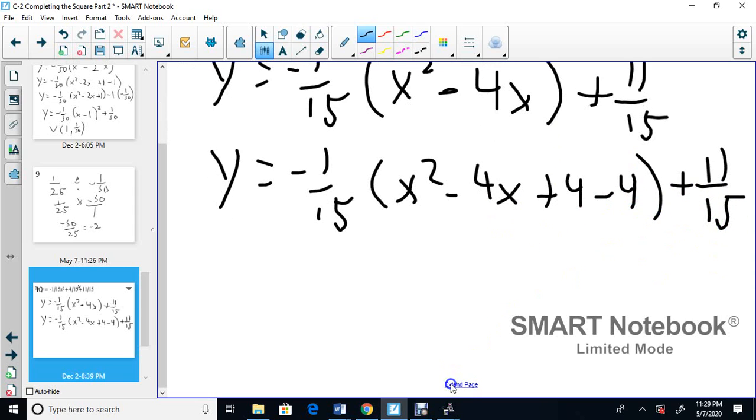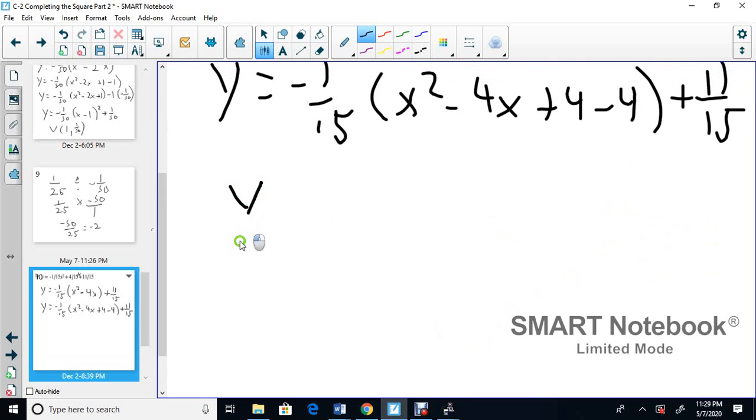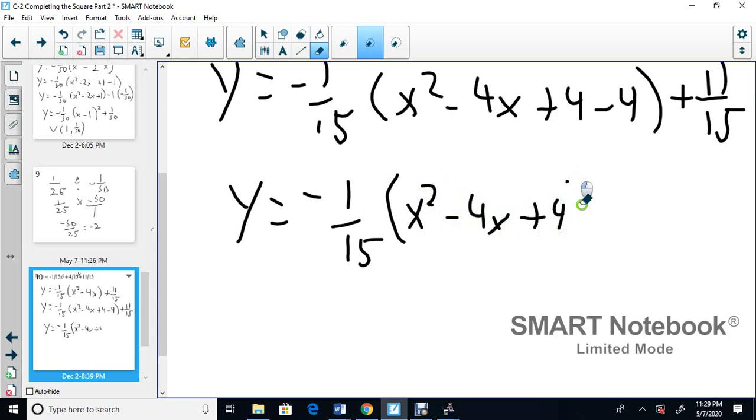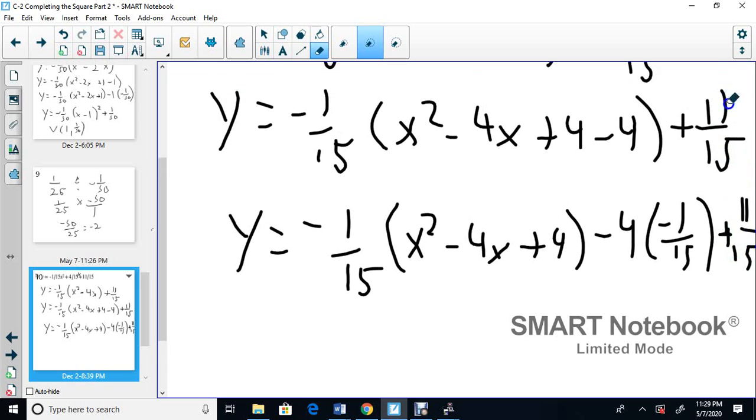On the next one here, y equals negative 1 over 15. That's a negative here. X squared minus 4x plus 4. We're going to take the negative 4 out, but when we do, we have to multiply by 1 over 15. And over here, we've got 11 over 15. So plus that 11/15 here.